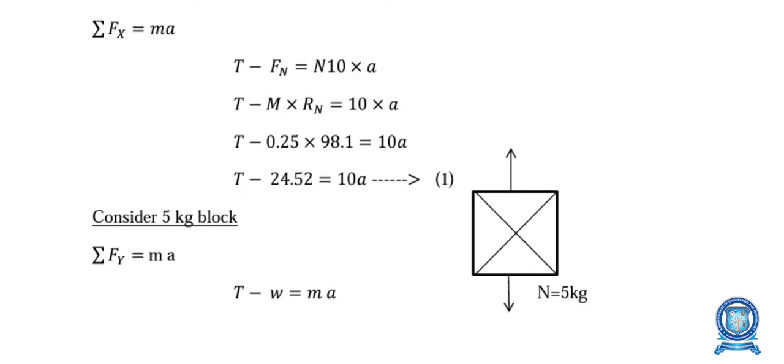Resolving forces horizontally (ΣFx = 0) for block A: T − Fn − MA = 0, where Fn = μk × Rn = 0.25 × 98.1 = 24.525 N. The inertia effect MA opposes the direction of motion. Simplifying, we get Equation 1: T − 24.52 = 10a.